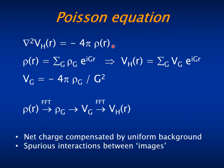We have already explained that SIESTA assumes that the system is periodically repeated — that is, periodic boundary conditions. This is true even for systems that are not really periodic, like molecules. This allows SIESTA to solve Poisson's equation, that is, to find the electrostatic potential from the density using fast Fourier transforms. You Fourier transform the density, the Fourier coefficients of the potential are related to those of the density by this simple relationship, and then you Fourier transform back to real space.